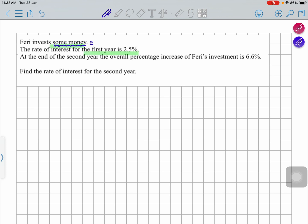You can say maybe Ferry invests $100. Why did I pick $100? Because $100 is easy when you're calculating percentage. See, initially when you started you had $100, but then the interest rate is 2.5% for the first year.